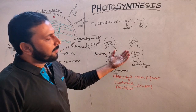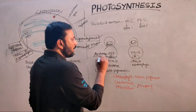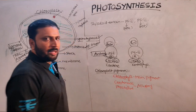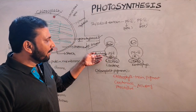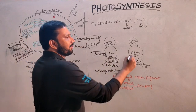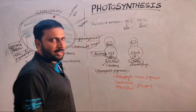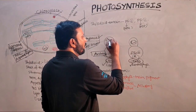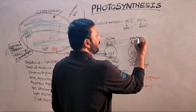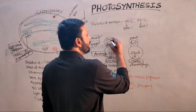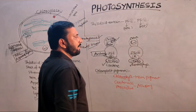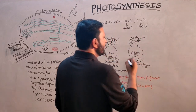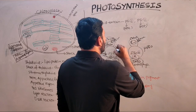Both photosystem I and photosystem II have an antenna and a reaction center. The antenna contains many chlorophyll a and b molecules. In the photosystem I antenna, more carotenes are present, whereas in the photosystem II antenna, more xanthophylls are present. In the reaction center, only chlorophyll a is present in both photosystems. The chlorophyll a of photosystem I absorbs maximum light at about 700 nm; hence it is called P700. The chlorophyll a of photosystem II absorbs maximum light at about 680 nm; hence it is called P680.